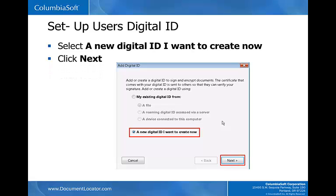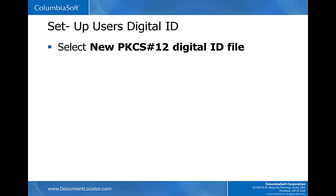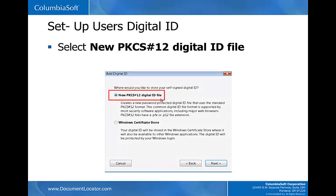Select a new digital ID I want to create now, because you are creating a new digital ID. Click Next. Select New PKCS-12 Digital ID File instead of Windows Certificate Store, so that the newly created digital ID can be viewed and verified between different operating systems. Click Next.